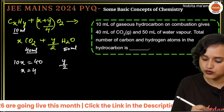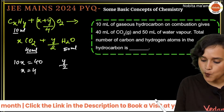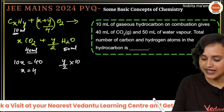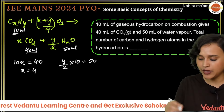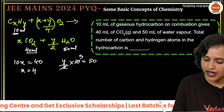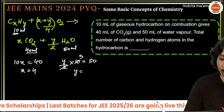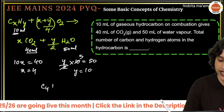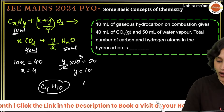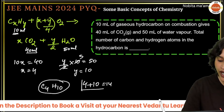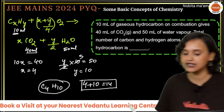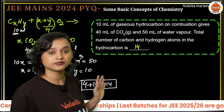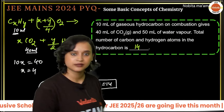So x = 4 and y = 10, meaning the molecular formula of the hydrocarbon is C₄H₁₀. Adding 4 + 10 gives 14. The total number of carbon and hydrogen atoms in the hydrocarbon is 14. This is again a very simple and easy question.